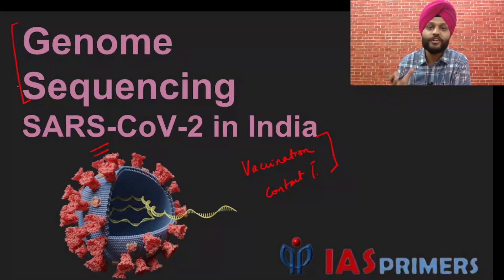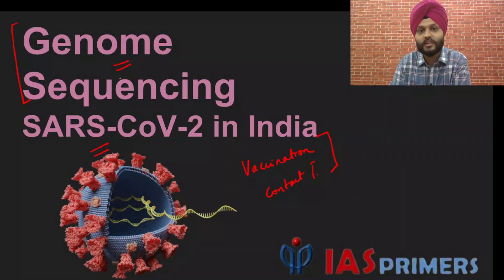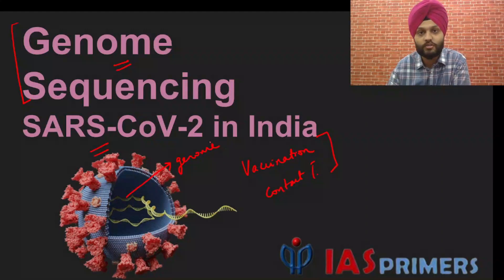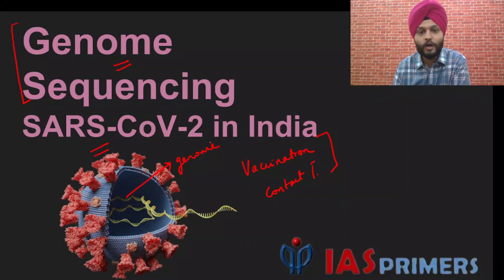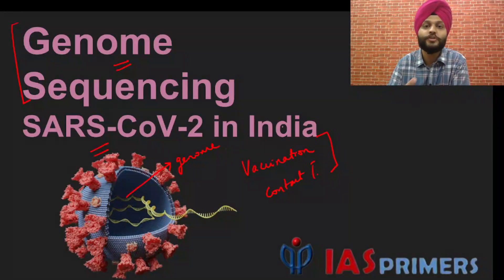This brings us to the question: what is genome sequencing? But before that, we need to know what is a genome. Genome is the genetic material prevalent in all living beings, including the virus. This genome is like a list of instructions — it defines the natural attributes of the virus. Now this genome keeps mutating and changing as a part of evolution. It is natural for the genome to change, and there would be various mutations.